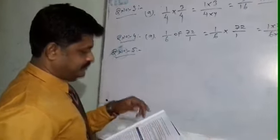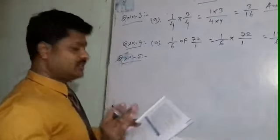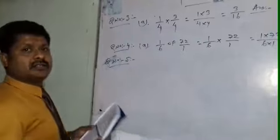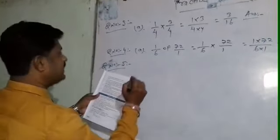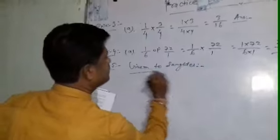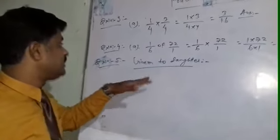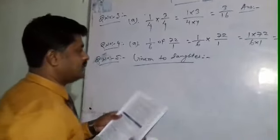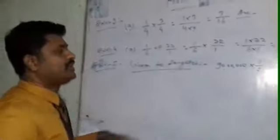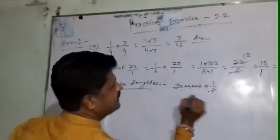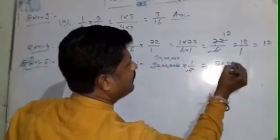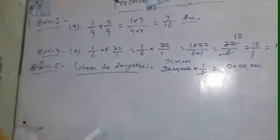Now solving: the amount given to daughter is 1 by 3 of 90 lakh. If you solve this, 1 by 3 multiplied by 90 gives 30. So 30 lakh rupees is given to her daughter.